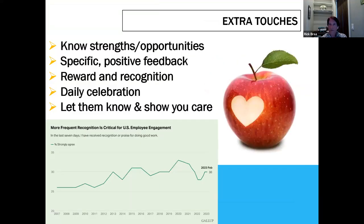We also have to provide extra touches. More frequent recognition is critical for US employee engagement. From the Gallup Q12: in the last seven days, I received recognition or praise for doing good work — about 30% agree. Back in 2007 it was around 26-27%, so that's come up a little, but not at the peak of 2020-2021 when people felt they were receiving more recognition. Things are going back to normal and slightly declining since the second peak in February.